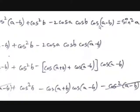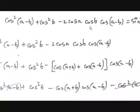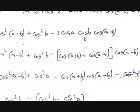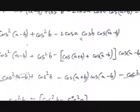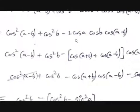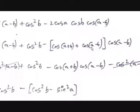We should prove that. This looks very big, but in mathematics to solve any problem, you should break it down step by step. We use the transformation formula: we know 2 cos A cos B = cos(A+B) + cos(A−B). So we replace 2 cos A cos B with that, then multiply by cos(A−B). This gives: cos²(A−B) + cos²B − [cos(A+B) + cos(A−B)] · cos(A−B).